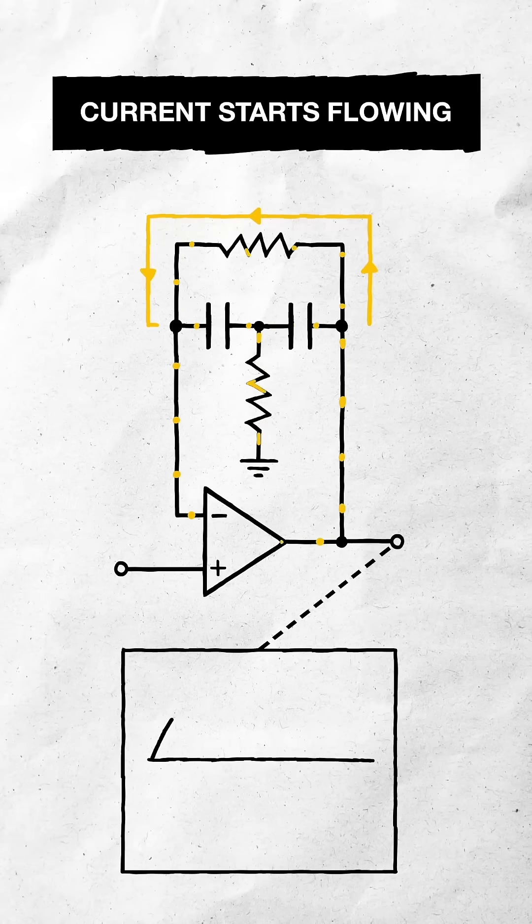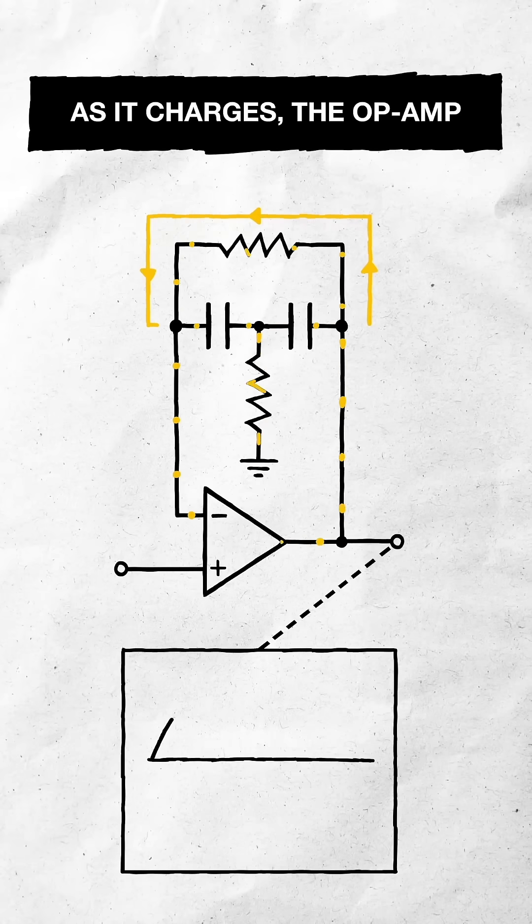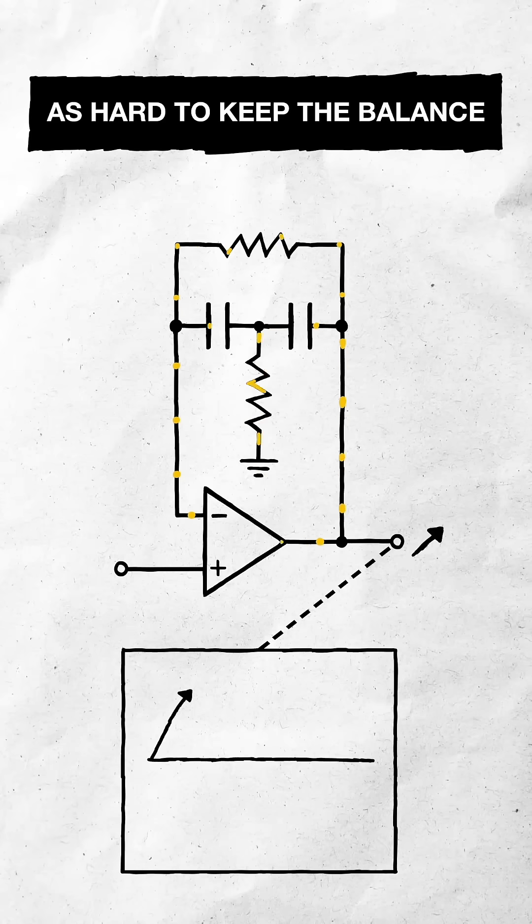Meanwhile, a smaller current starts flowing through the big bridge resistor into the left capacitor. As it charges, the opamp doesn't need to push as hard to keep the balance.